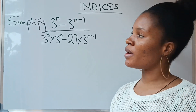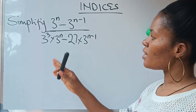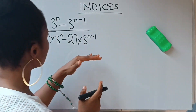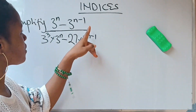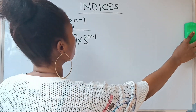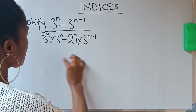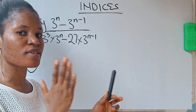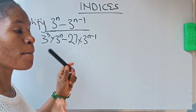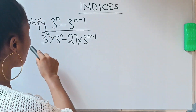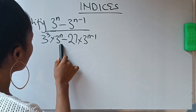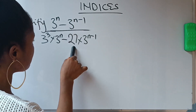Hello everybody, welcome to my channel. Let's get straight to this. When you're given something like this under indices, the first thing you need to do is look out for the bases and try to put them in the same base. Looking at this, notice that everything here is in base 3 — 3, 3, 3, 3 — except this one.